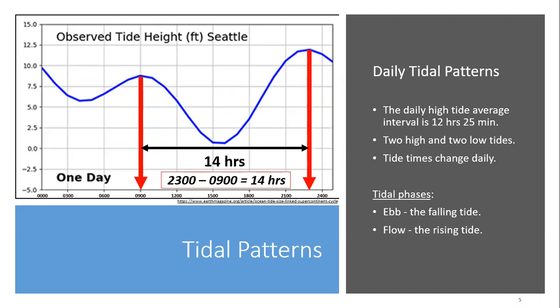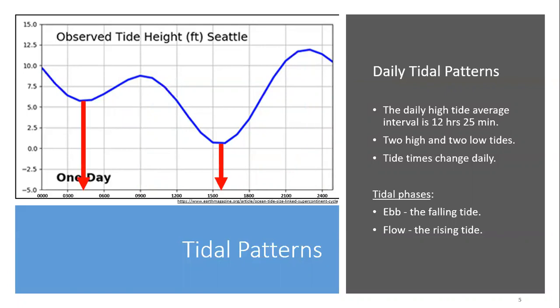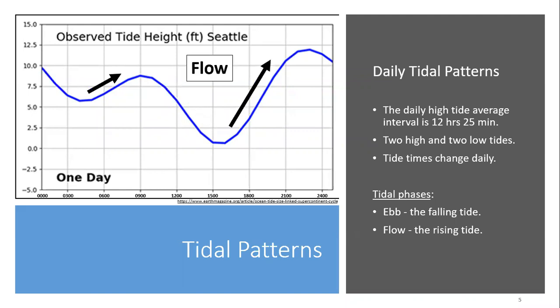Regardless of location, we need to understand that there are two high tides and two low tides. Remember that this example illustrates a daily sample in Seattle, Washington. As the moon rotates around the Earth, daily tide levels and times will change and will vary based on location. Lastly, tides ebb and flow. Ebb phases designate a falling tide. Flow phases designate a rising tide.